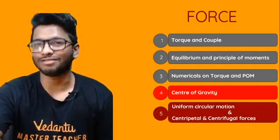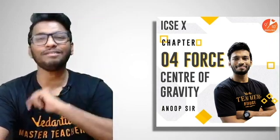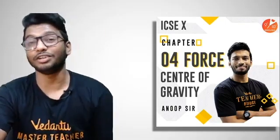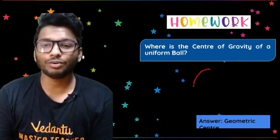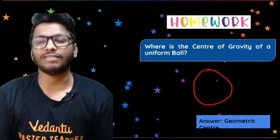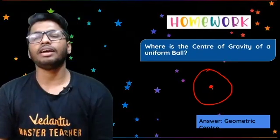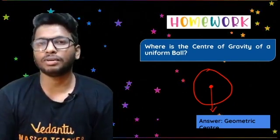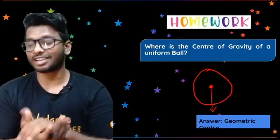If you haven't watched the last session on center of gravity, please do watch it. In that session I had given you a homework question: where is the center of gravity of a uniform ball? The answer is that for a uniform ball, the mass is distributed uniformly, so the center of gravity would be at the geometric center. For any uniform, symmetric body, the center of gravity is at the geometric center.